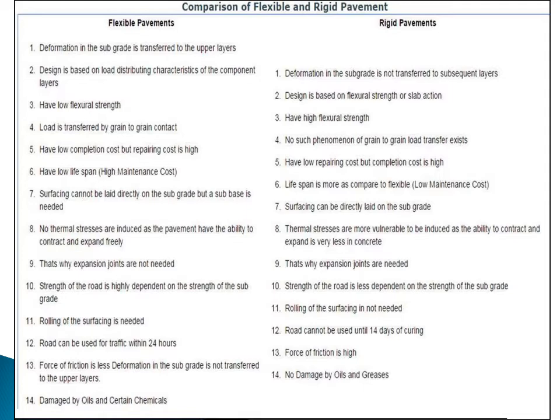The fifth point is lifespan. Flexible pavements have a lower lifespan — their design life is 8 to 10 years, or a maximum of 10 to 15 years. Whereas rigid pavements demand less maintenance and their lifespan is more — earlier it was 20 to 30 years, but with advanced materials it is now designed up to 30 to 50 years.